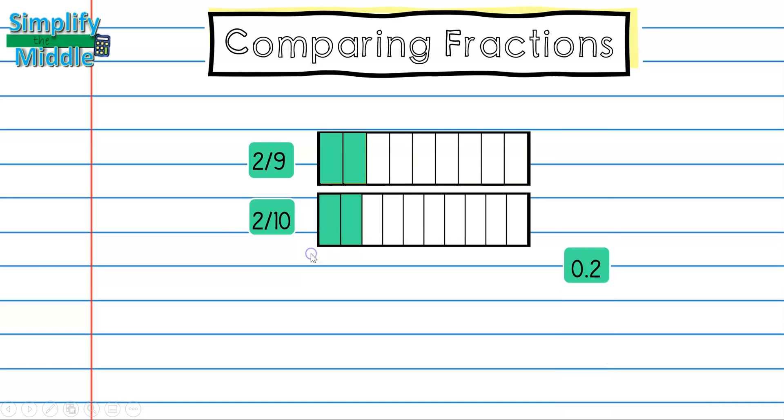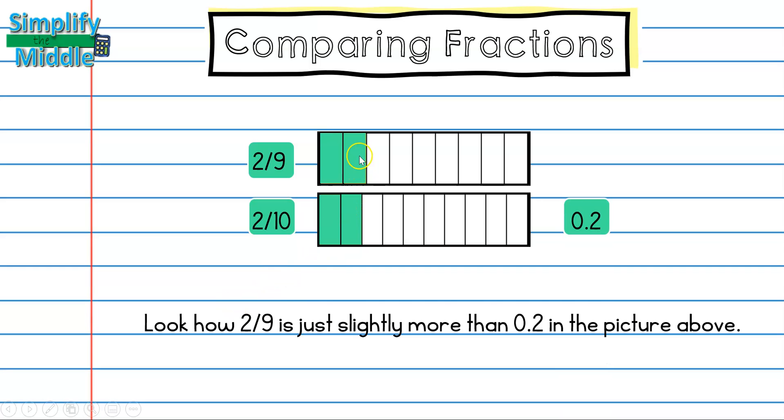Another way of saying 2 tenths is just with 0.2. Look how 2 ninths up here is slightly more than 2 tenths in the picture above. That's because if I were to divide 2 by 9, I would find that I would get 0.2 repeating. So this has 0.22 while this has 0.20, so it is bigger.